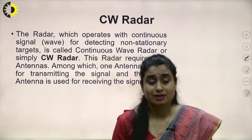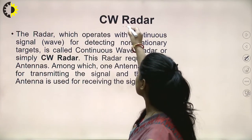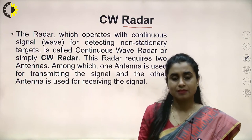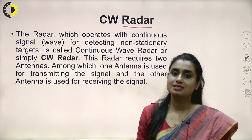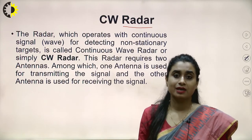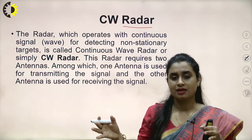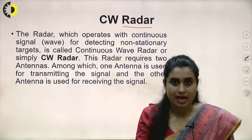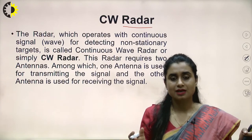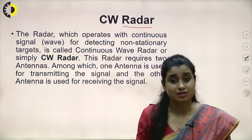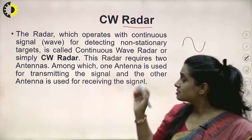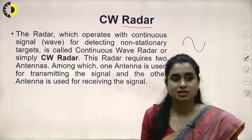First of all, what is a CW radar? We know that radar is an acronym for radio detection and ranging - for detection of a stationary or moving target, and ranging which is the distance of the target from the source. In our previous lecture we studied the various kinds of radar: primary and secondary radar, active and passive radar, then pulse modulated radar and continuous wave radar. In pulse radar, the transmitted electromagnetic signal is a high-frequency train of pulses, whereas in CW radar we transmit a continuous sinusoidal wave.